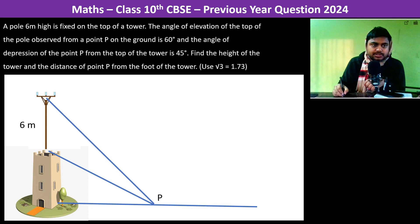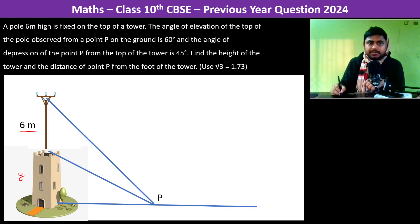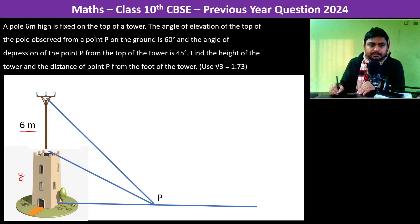The pole is 6 meters. Let the tower be of height y meters and let the point P be at a distance of x.